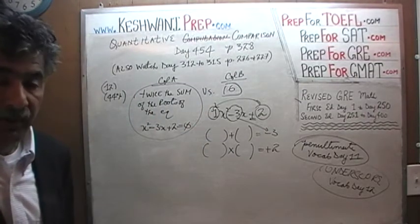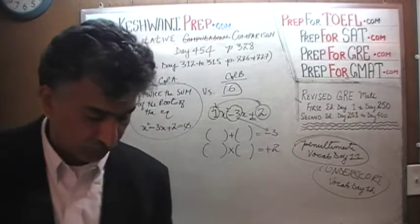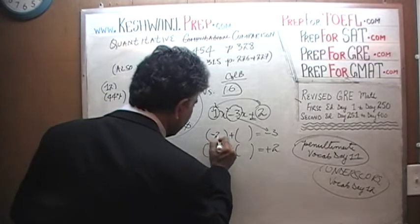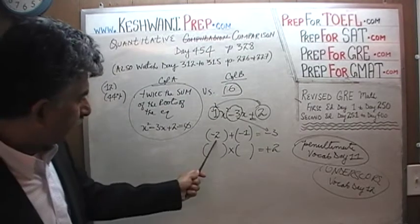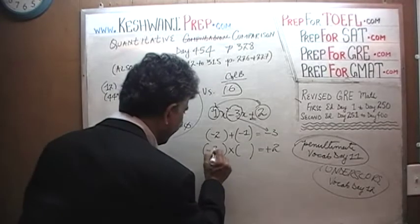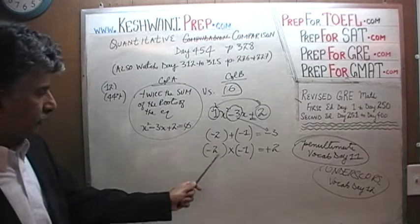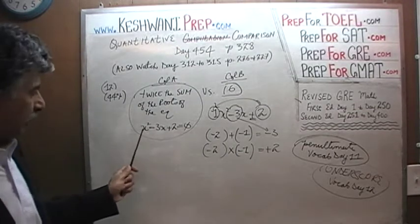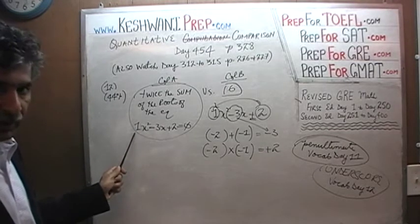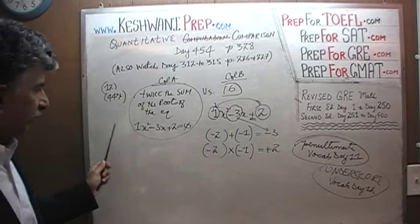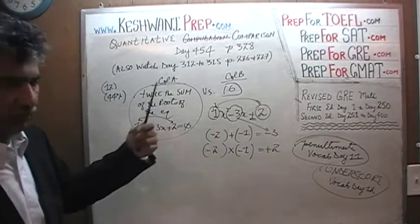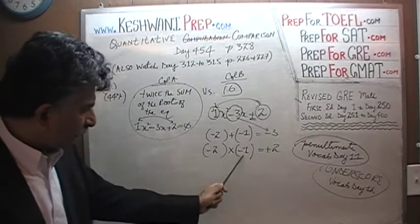Pause the video if you have to and think about it. The two numbers we need are negative 2 and negative 1. Negative 2 plus negative 1 gives us negative 3, which is the coefficient of x. And negative 2 times negative 1 gives us positive 2. The coefficient of x squared is just 1, so 1 times positive 2 is 2 — the product of these two numbers is 2.